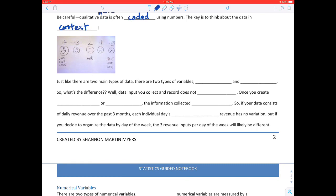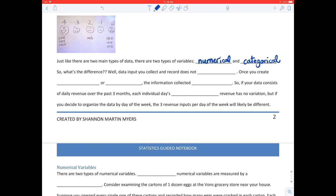So just like there's two main types of data, there's two main types of variables: numerical and categorical. So what's the difference? Data input you collect and record does not change, right? Once you create groups or classes, the information collected within each class will vary.